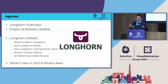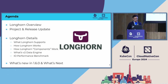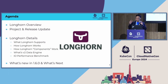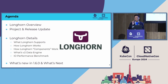So Longhorn — I believe some of you are already using it, but I want to do an overview again to let everybody know more about Longhorn itself. The agenda: first I will go through the Longhorn high-level overview, project and release update, then go into the Longhorn details — what Longhorn supports, how Longhorn works, how the inside components work, what's the new V2 data engine we are working on, IO performance between V1 and V2, what's new in 1.6 — the latest release from February — and also what's next.